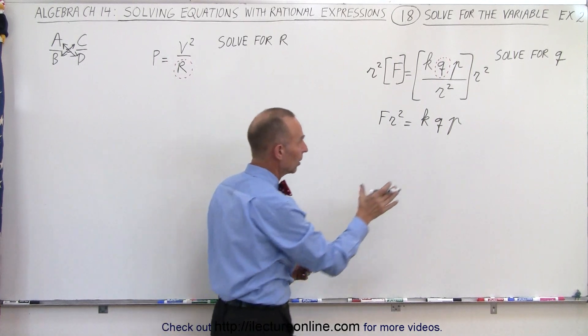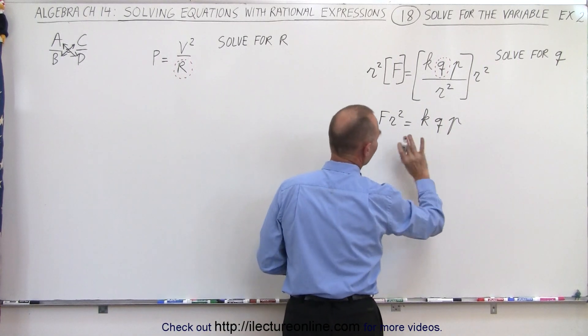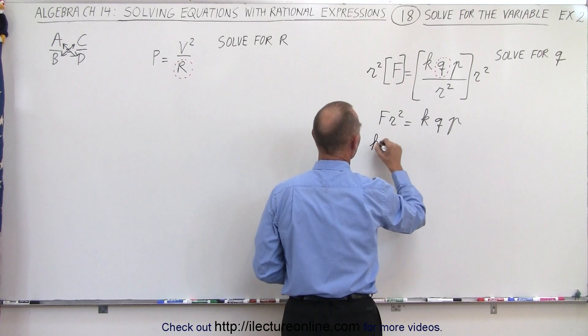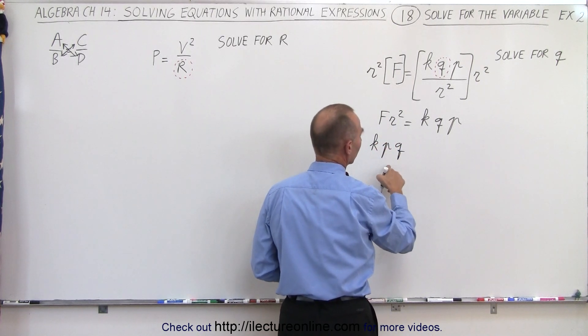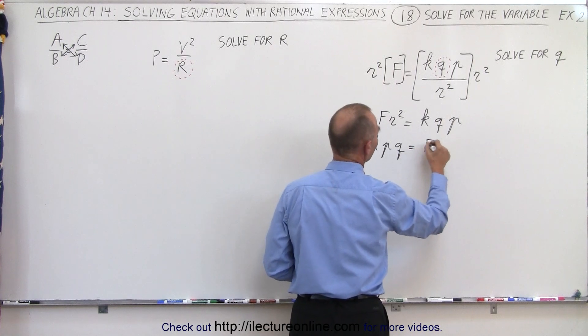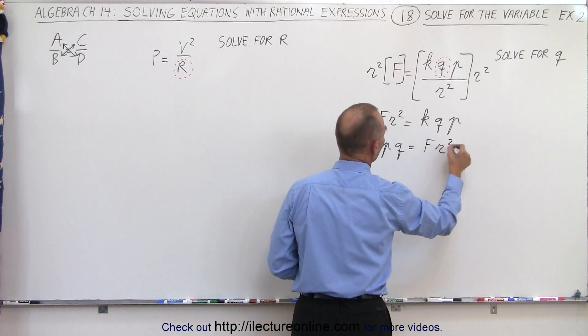so I'm going to move the equation around, move this to the left, move that to the right, simply flop it over. So we have kpq, and I'm going to rearrange the variables, equals f times r squared.